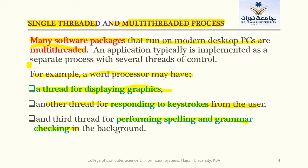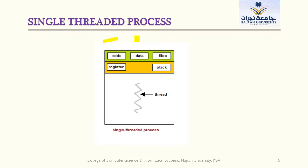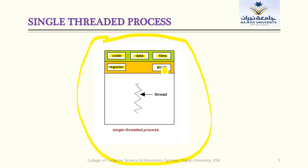So a thread is a lightweight process, and we have two types of models: single-threaded and multi-threaded. In single-threaded, a process is divided into only one thread; in multi-threaded, one process may be divided into many threads. Looking at the diagram, in any thread we have five main components: code, data, files, registers, and stack.